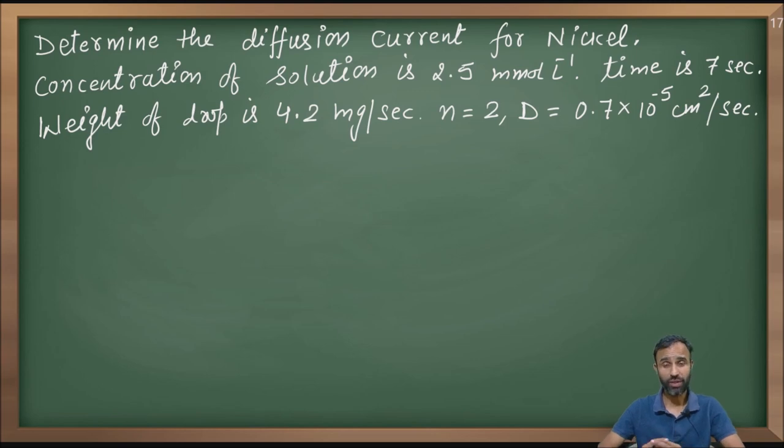Time is given in seconds. Weight of the drop is also given in milligram per second. N is given as 2 and D diffusion coefficient is given as 0.7 into 10 raised to the power minus 5 centimeter square per second.